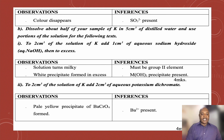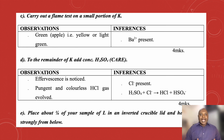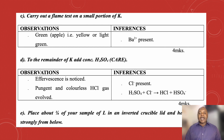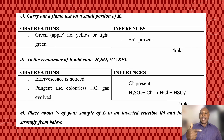Test B3: carry out a flame test on a small portion of K. To carry out a flame test in the laboratory, you need hydrochloric acid and a nichrome wire. Dip the nichrome wire into concentrated sulfuric acid, then use it to pick up the salt sample and hold it to the blue flame. From there, you will be able to identify the color of the flame.